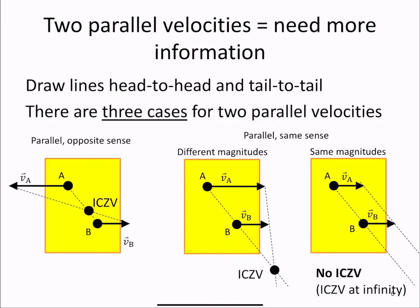If you have two parallel velocities, what we do is actually draw our lines from head to head and tail to tail, and the intersection is the ICZV. There are three cases that you can have with parallel velocities.